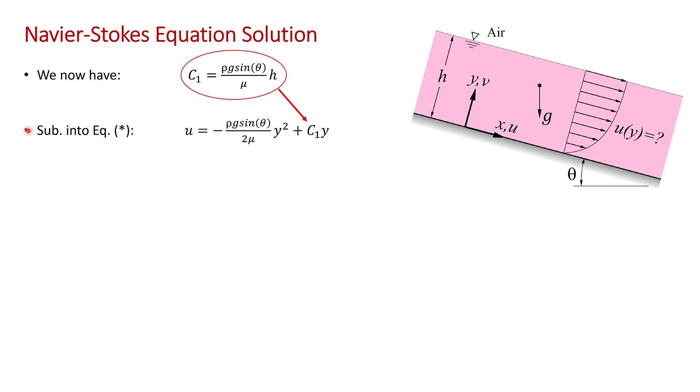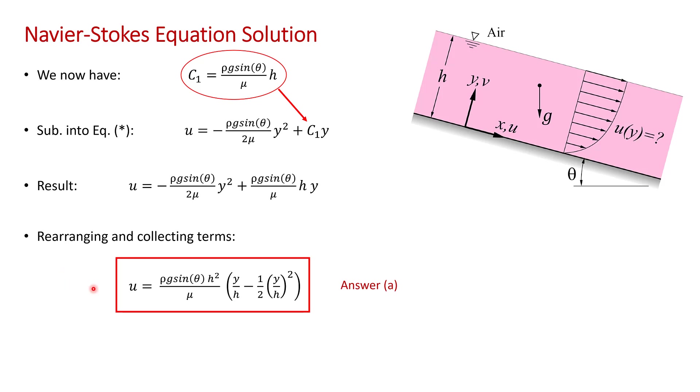I've just rewritten here equation star, and all that remains is to substitute c₁ into equation star. And that's what I've done here. You can check my algebra: -ρg sin θ/(2μ) y², and there's c₁, ρg sin θ/μ h times y. In an exam situation, I would consider that the final answer. For the purpose of this presentation, I've collected some terms and rearranged it slightly into a tidier form. So the x component of velocity equals ρg sin θ h²/μ [y/h - (1/2)(y/h)²]. So that's the answer to part a.